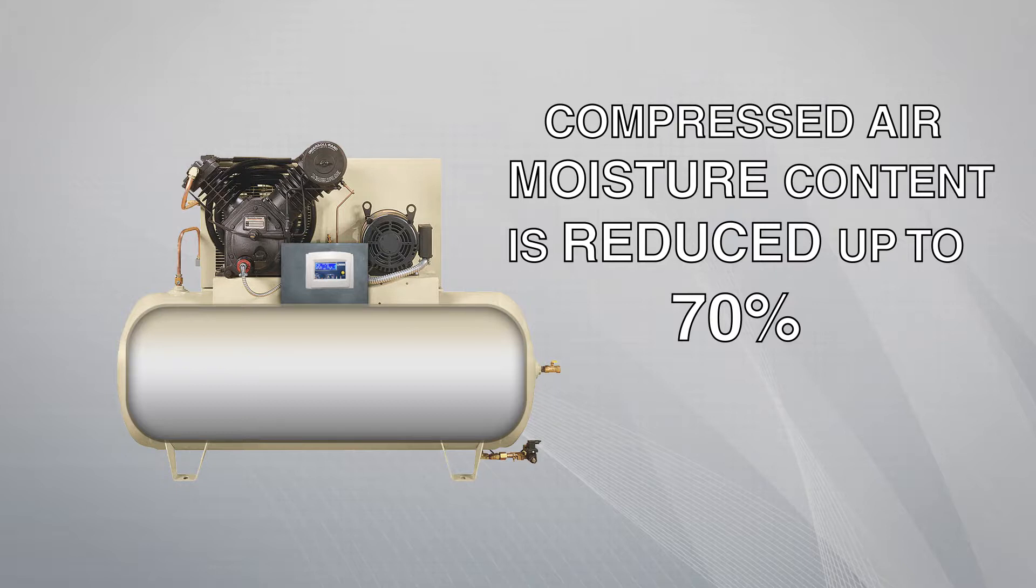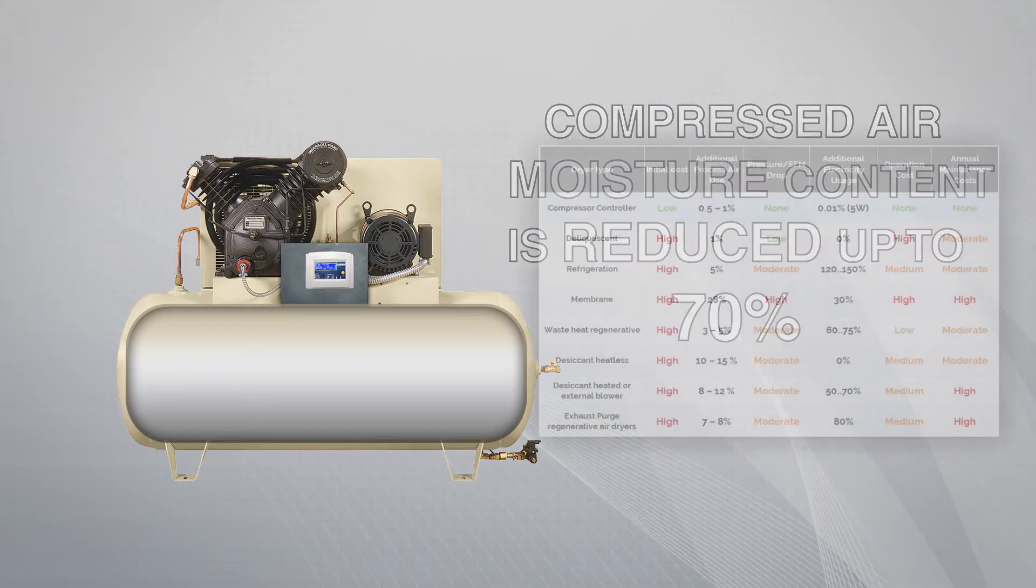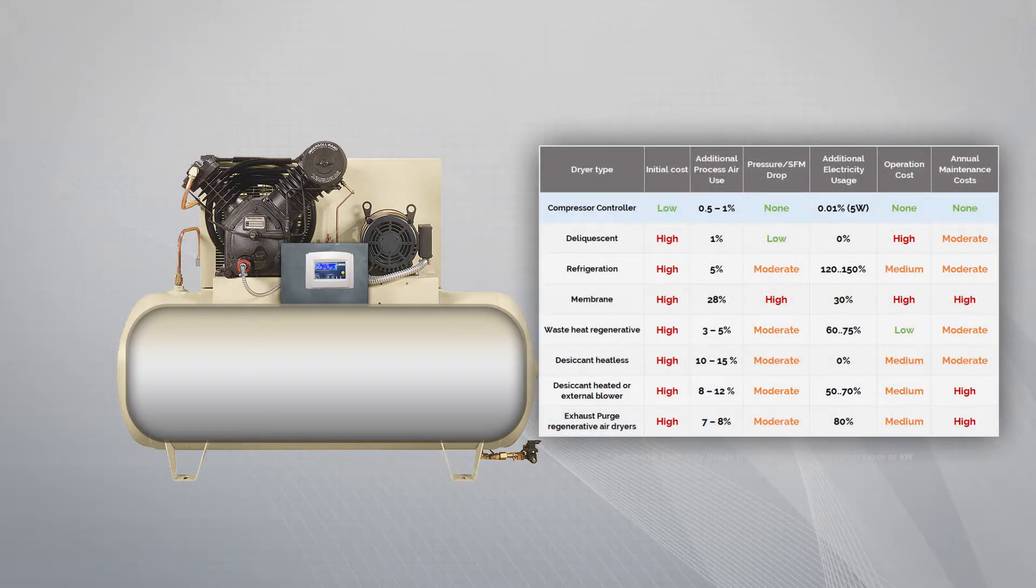In operations where dry lines are critical and desiccant or other dryers are installed, the compressor controller provides a much less expensive way to dehumidify the air and reduce the energy and maintenance costs of compressed air operation.